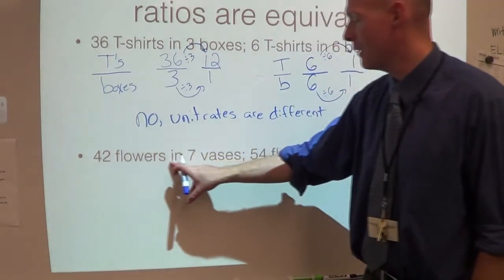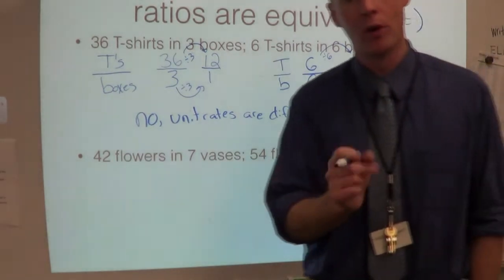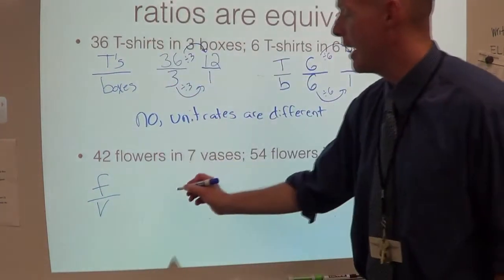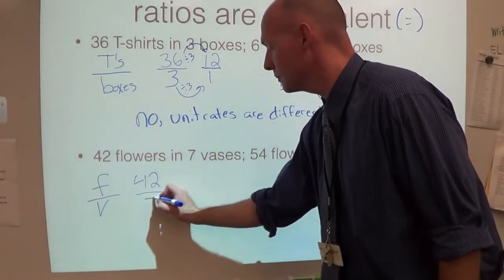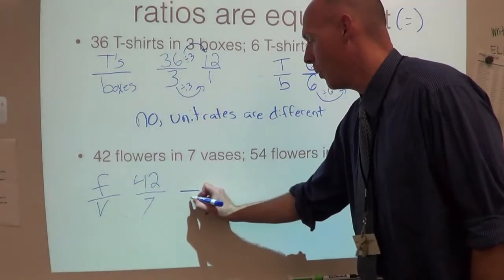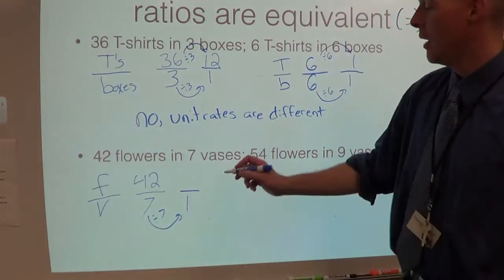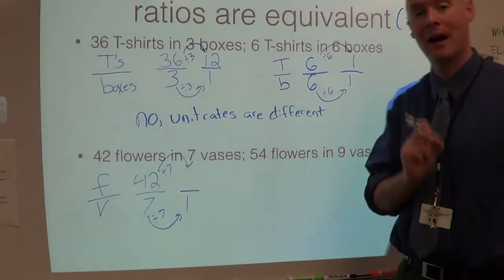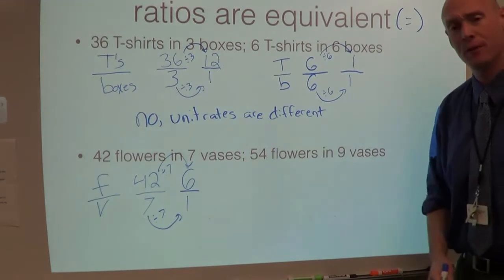Here I have 42 flowers in seven vases and 54 flowers in nine vases. Let's set it up word over word first — flowers over vases. I have 42 flowers in seven vases. So that's my first ratio. Let's find its unit rate. Remember, I have to get it over one. How do I go from seven to one? Divide by seven. And if we do it there, we also have to do it here — divide by seven. 42 divided by seven is six. So the unit rate for the first one is six to one.